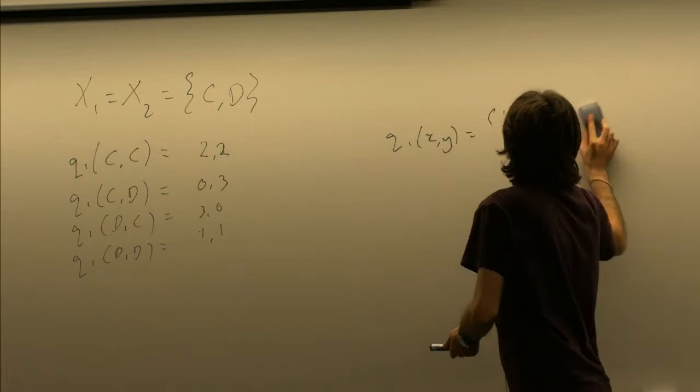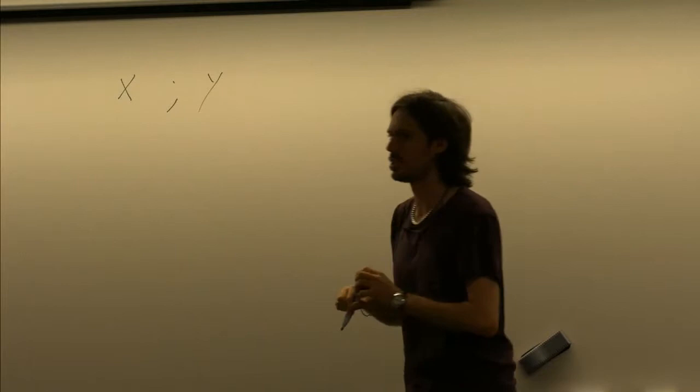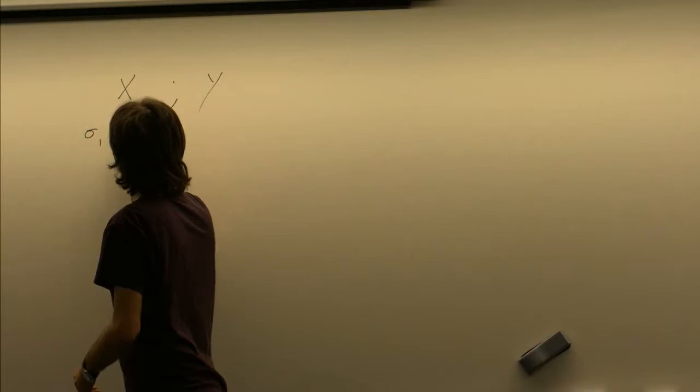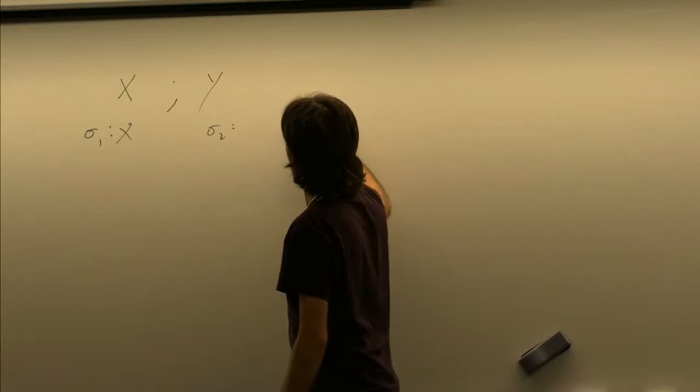Now we can also have dynamic games. In a dynamic game, first player one chooses from X and then player two chooses from Y. Now we need to distinguish between moves and strategies. Player one moves first and doesn't observe anything, so a strategy for player one is just a choice of move. But player two can observe what player one does, so player two's strategy can be a choice of Y given an X — a strategy is a function.